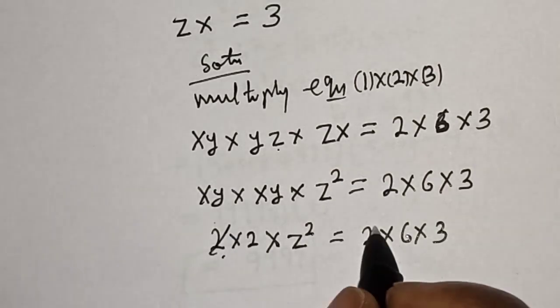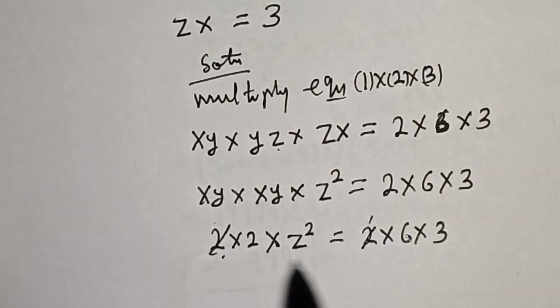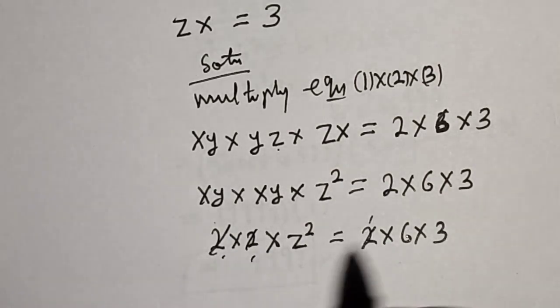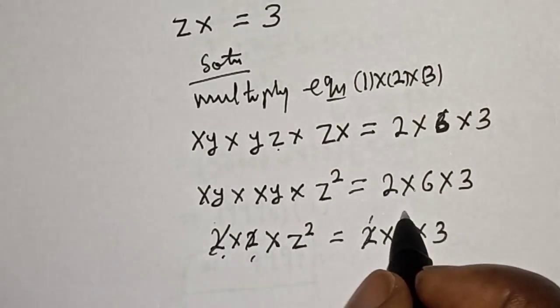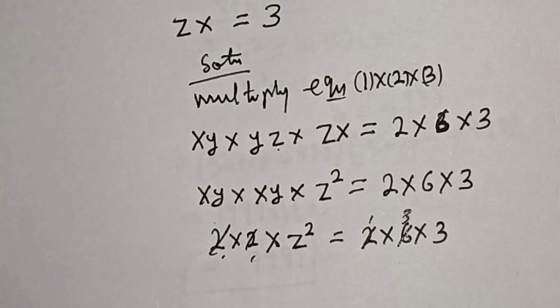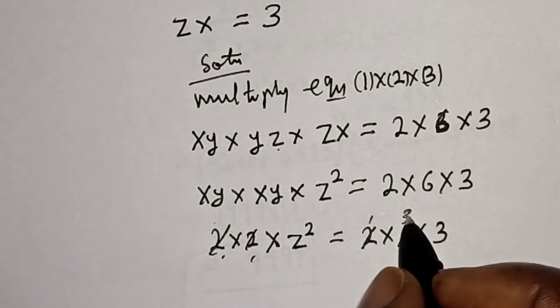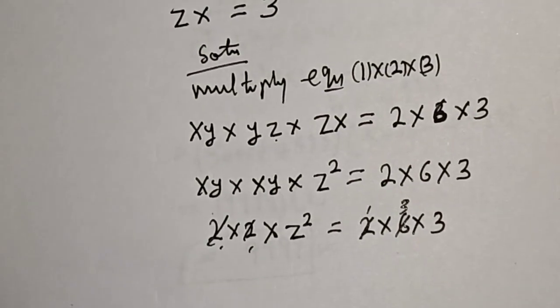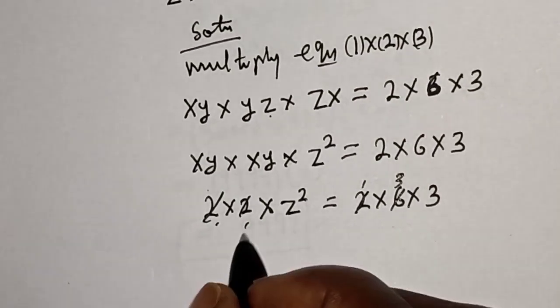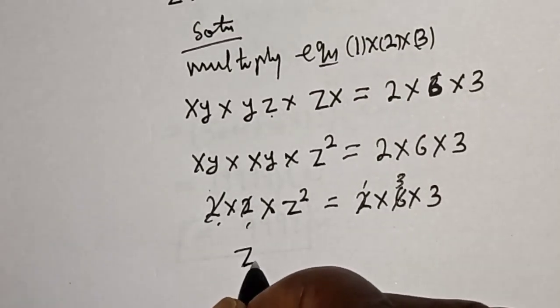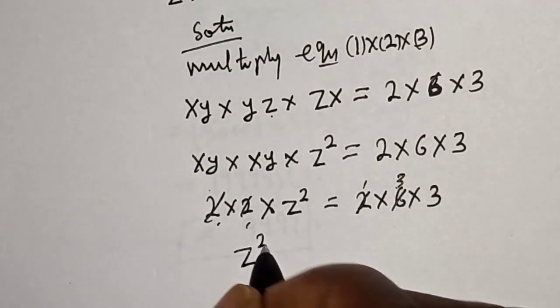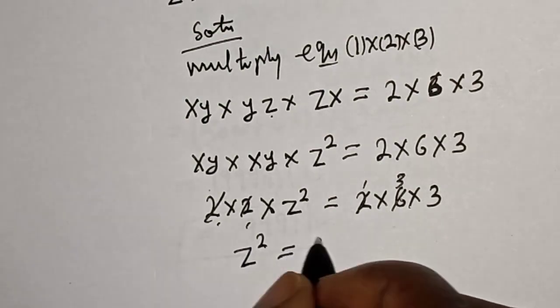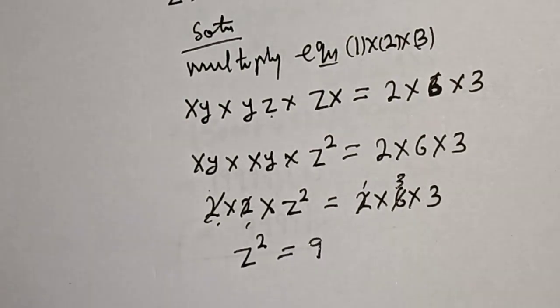Canceling the 2s on both sides, we get Z² is equal to 9.